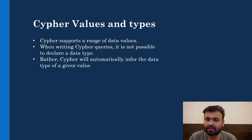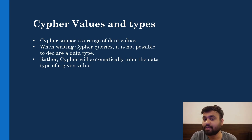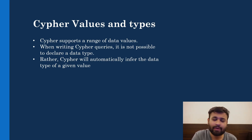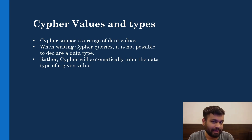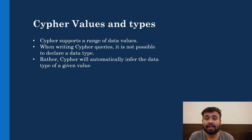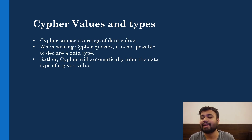This will be a very short lecture where we are going to see what really are the types and different values in Cypher. Basically, Cypher will provide you a range of different data types as well as data values. When writing your Cypher query, it is not possible to declare a data type. In the previous lecture, we have seen that while writing a query we have not declared any specific data type while returning any data, and Cypher is automatically inferring the schema types based on the given values. If you give an integer value, it infers it as an integer; if you give a string value in quotes, it considers it as a string.